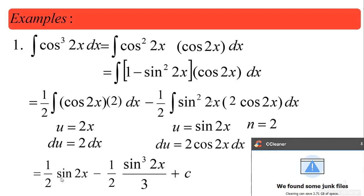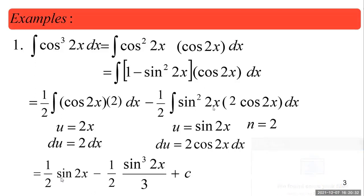The reason it has a one-half is because if u is 2x, then du must be 2 dx, so we bring out the one-half. Looking at which term is more complicated — definitely the one with higher power. If u is sine of 2x, then du is 2 cosine 2x dx, so we need a factor of 2, meaning we supply a one-half. The integral of cosine is sine, giving one-half sine 2x. The integral by power rule gives sine to the third over 3.